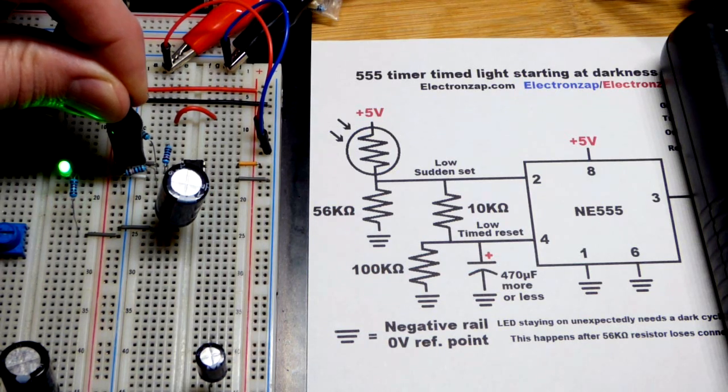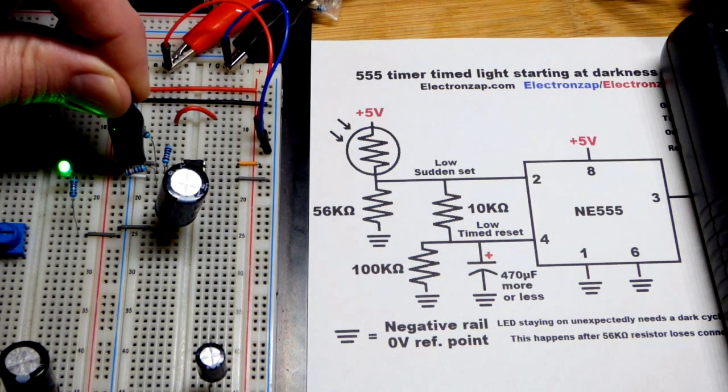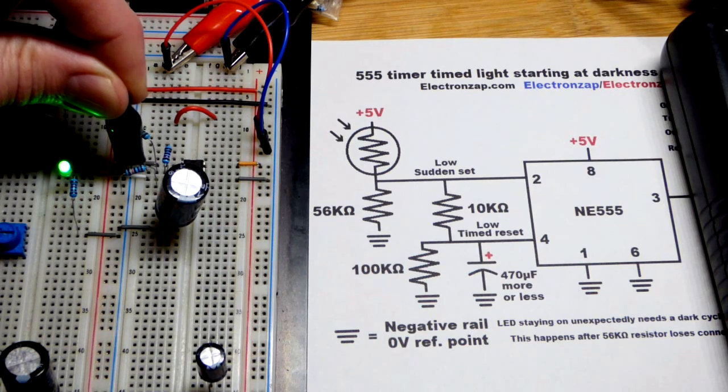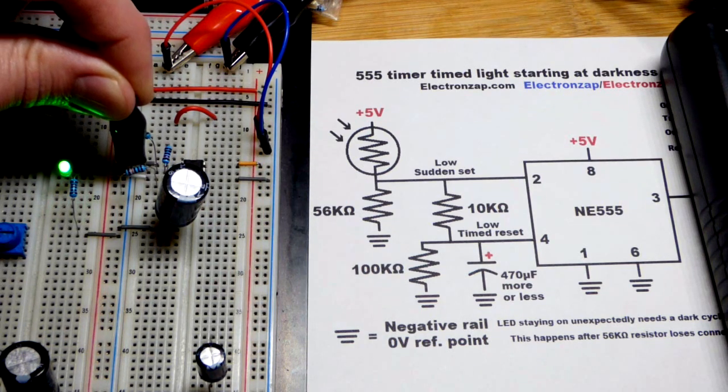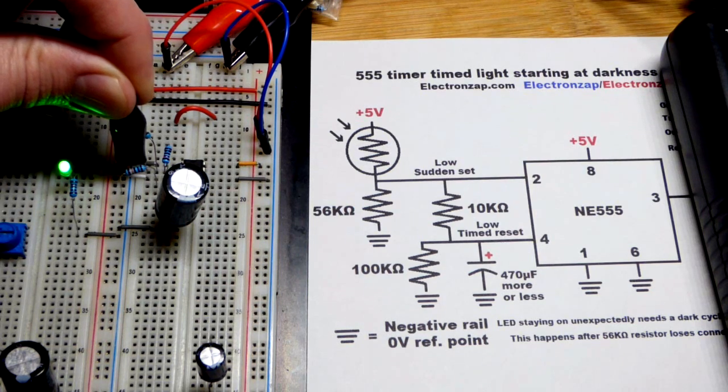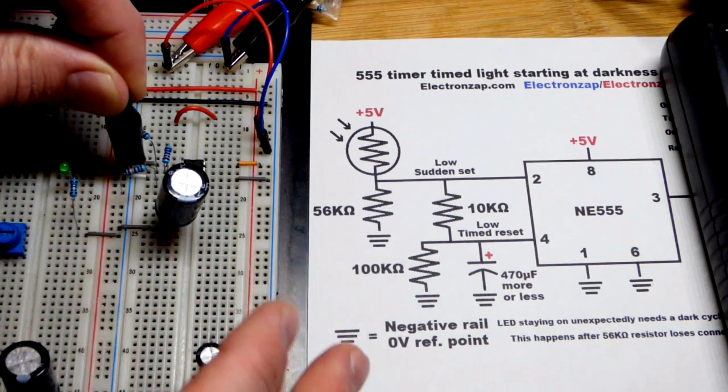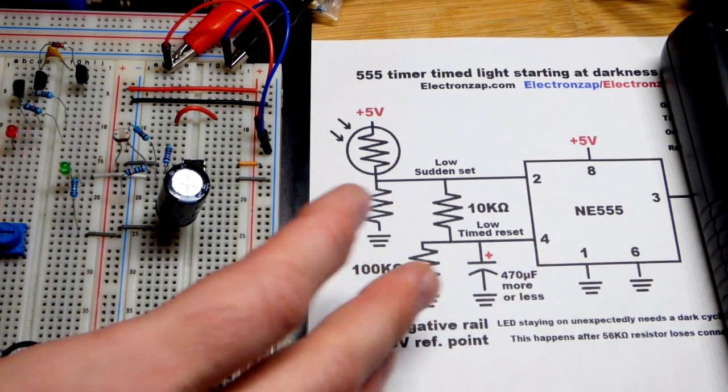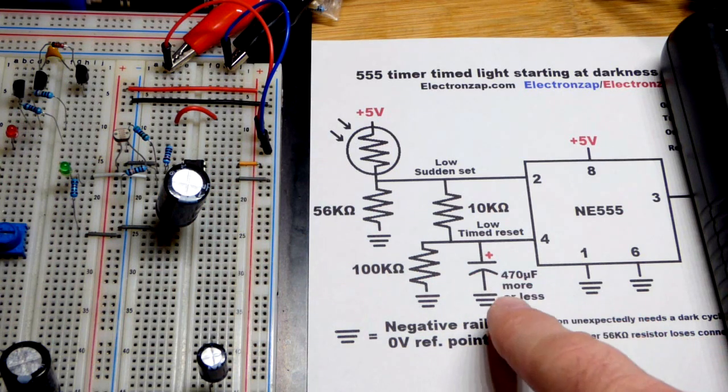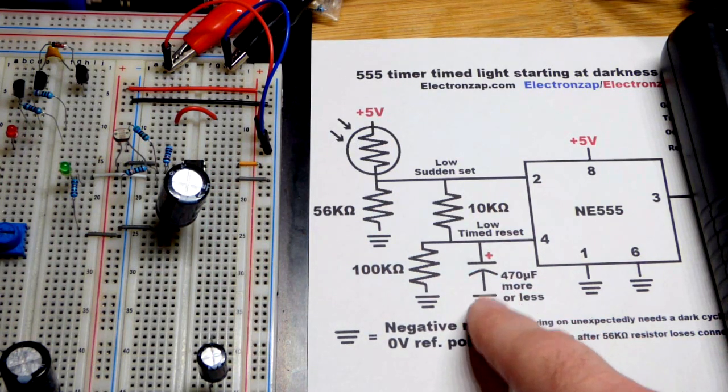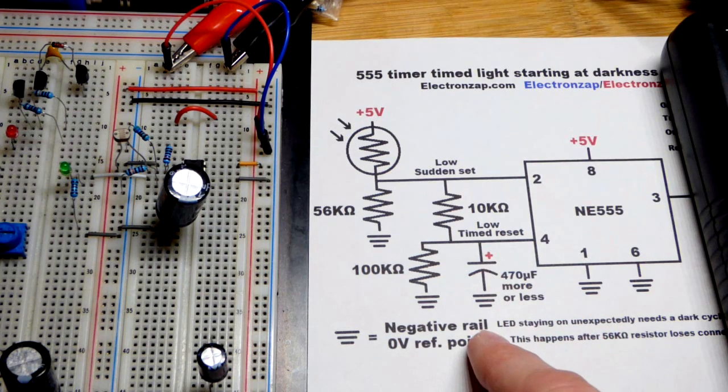We're going to use smaller value capacitors later on. But you're going to see here that by making the light dependent resistor dark, the LED turned on and it's going to stay on for a period of time. So the amount of time, since we're going to use the same value resistors, finally turned off, is going to depend on the value of the capacitor. And so from now on, we'll use smaller value capacitors so that it goes quicker.